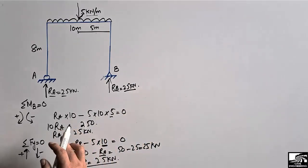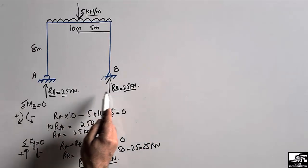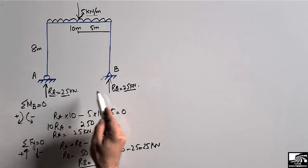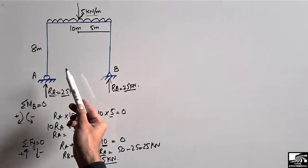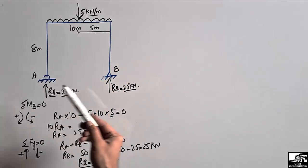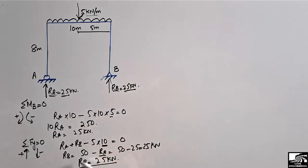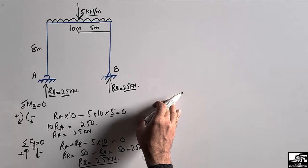So the whole load is taken by the two supports with the same magnitude: 25 kilonewton and 25 kilonewton. This makes sense because it is a uniformly distributed load, so half is taken by each support. This is the standard approach to calculate the reactions.